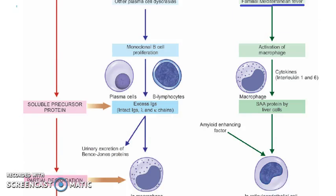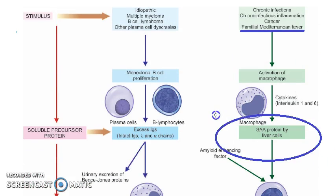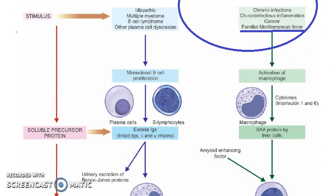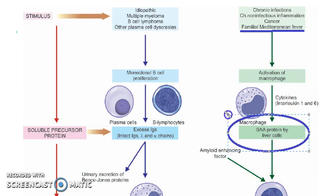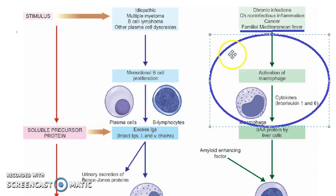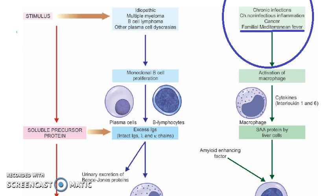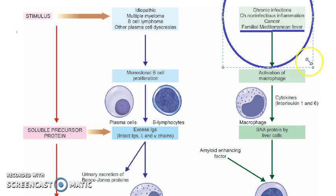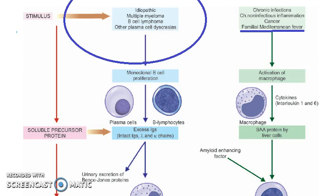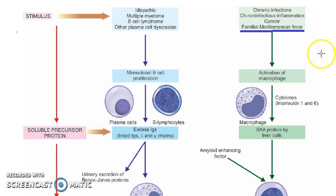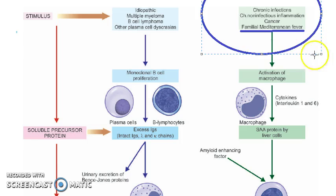Basically the AA amyloid is because of the SAA, produced by the liver, which is stimulated by the interleukins. This is because of chronic inflammation, cancer, and familial Mediterranean fever. The main things to know: multiple myeloma, B cell lymphoma, and other plasma cell dyscrasias for AL. For AA it is chronic inflammation, cancer, and familial Mediterranean fever.